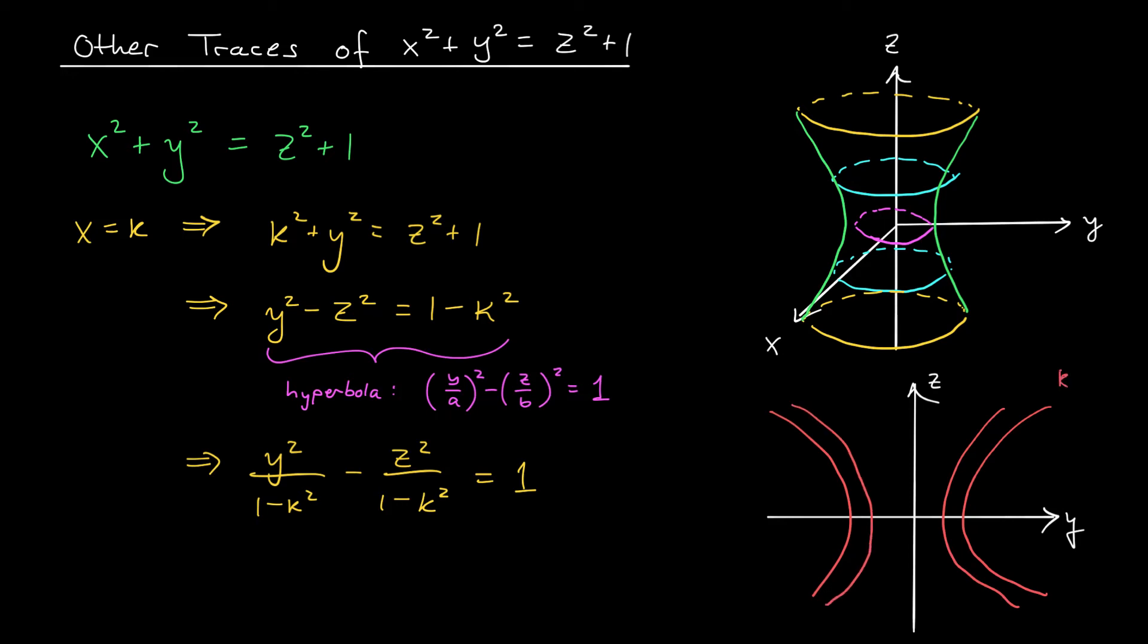When k becomes quite large, either in the positive or negative direction, however, 1 - k² is going to be negative. And when we divide by a negative number, this term is now going to be the negative one, and the z term is going to be the positive one. So for larger values of k, we're going to get a hyperbola opening in the z-axis.